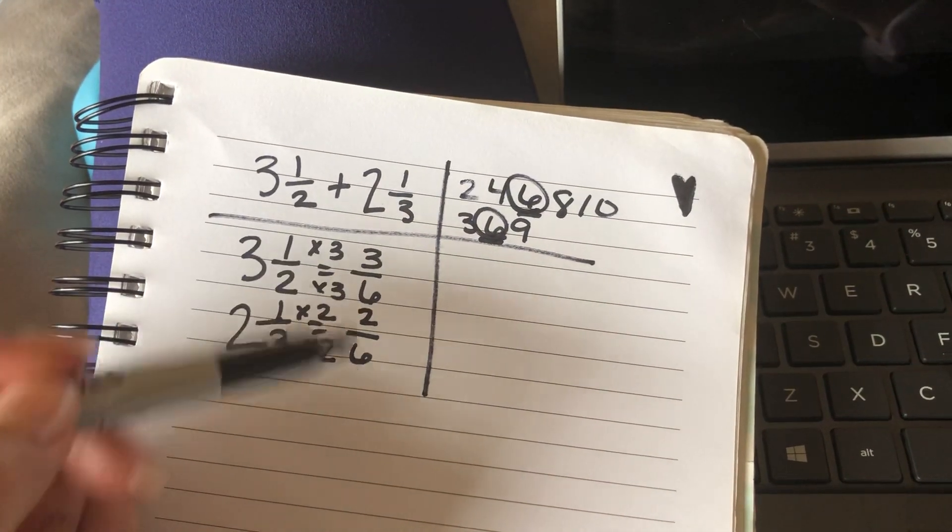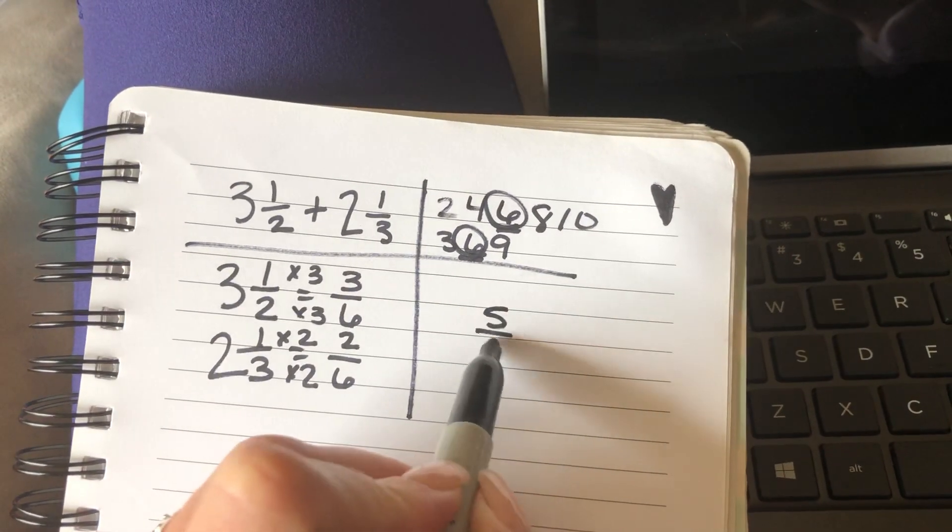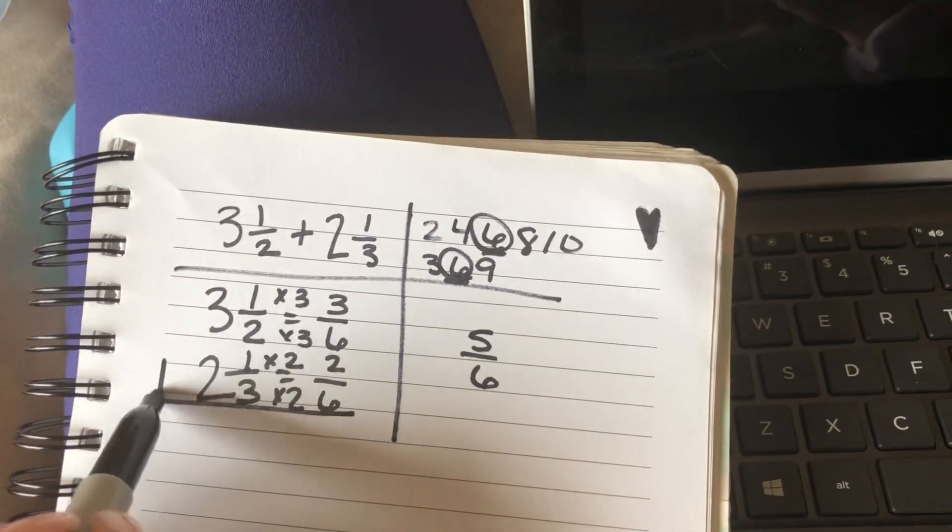So now I have 3/6 plus 2/6. Well, I can do that. 3/6 plus 2/6 is 5/6. Or you can do it down here, either way.